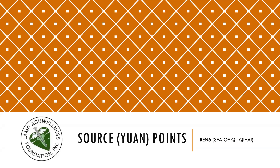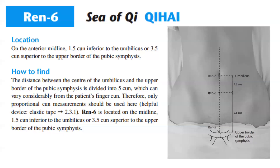Let's discuss REN6, Qihai, Yuan Source Point. REN6 is located on the anterior midline, 1.5 cun inferior to the umbilicus, or 3.5 cun superior to the upper border of the pubic symphysis. The distance between the center of the umbilicus and the upper border of the pubic symphysis is divided into 5 cun, which can vary considerably from the patient's finger cun. Therefore, only proportional cun measurements should be used here.